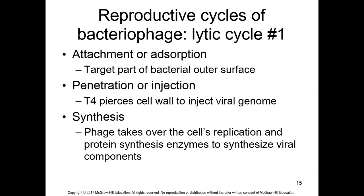Considering the binary symmetry of bacteriophages: the head is the capsid plus nucleic acid, the tail has helical symmetry, and at the bottom of the tail are fibers for attachment. The first step is attachment or adsorption — the bacteriophage finds the right spot on the bacterial cell surface and attaches with the help of tail fibers.